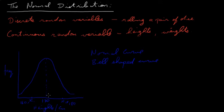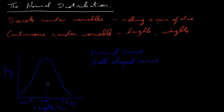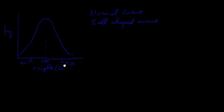This normal curve gives us an idea of how heights are distributed across a population. There aren't too many people below 160, 150, or 140 centimeters, and not too many very tall people around 180, 190, or 200 centimeters. The majority of the population are around the middle height.